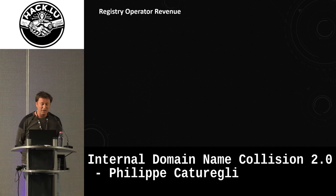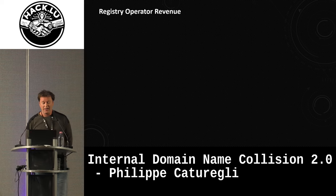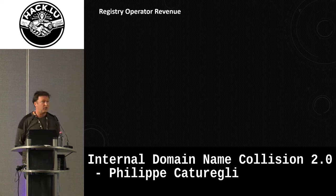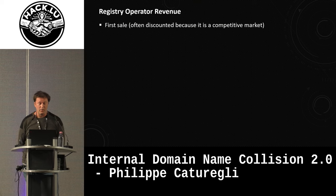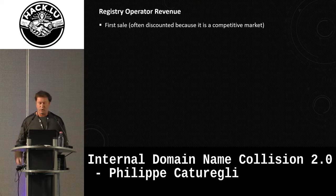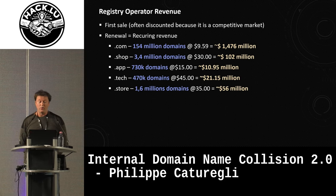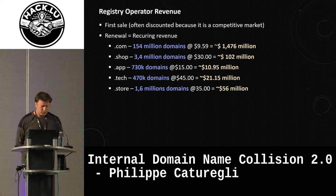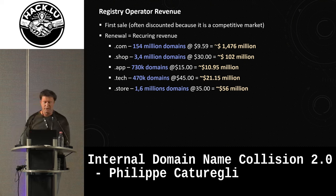For the business to work, ICANN can't be the only one making money, so the GTLD operators are also making a lot. First by selling domains, usually at a discount price because it's a competitive market, but the main revenue maker is from the renewal of those domains. Here are some numbers that these GTLDs are making.